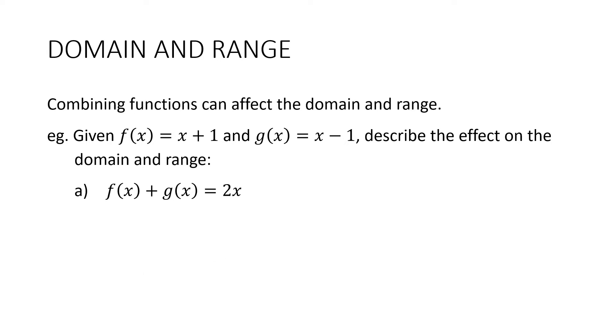Now let's look at those same functions again and describe the effect on the domain and range. So our first one was f(x) + g(x) = 2x. And we said that that is a straight line. It goes through (0, 0) and it has a gradient of 2. Now, most straight lines have a domain of all real x. And this one is no different. So it goes from negative infinity up to positive infinity. And most of them have a range of negative infinity up to positive infinity as well. And that's the case here.